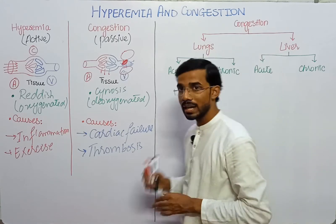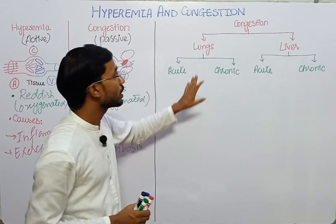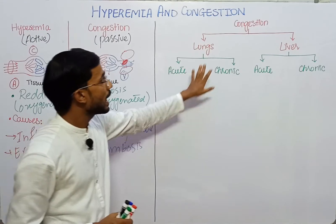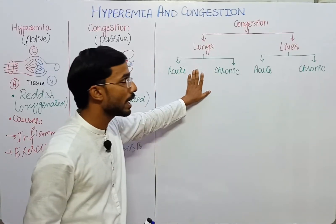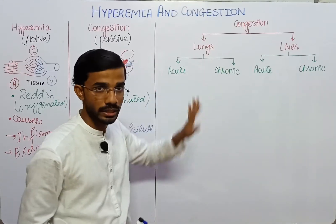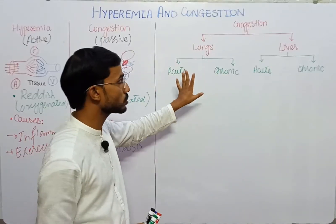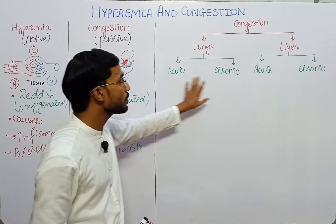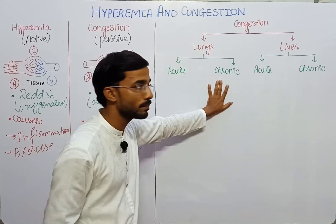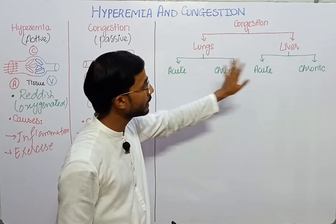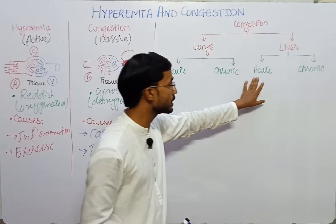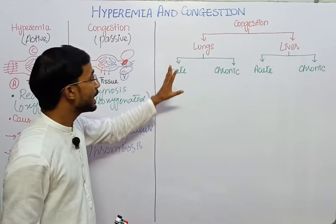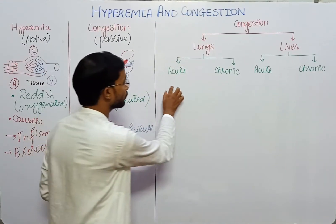Next, we will see the types of congestion — congestion in the liver and congestion in the lungs. We will discuss two organs: acute form and chronic form. In the liver we discuss the same acute and chronic. In lungs, we discuss acute first.